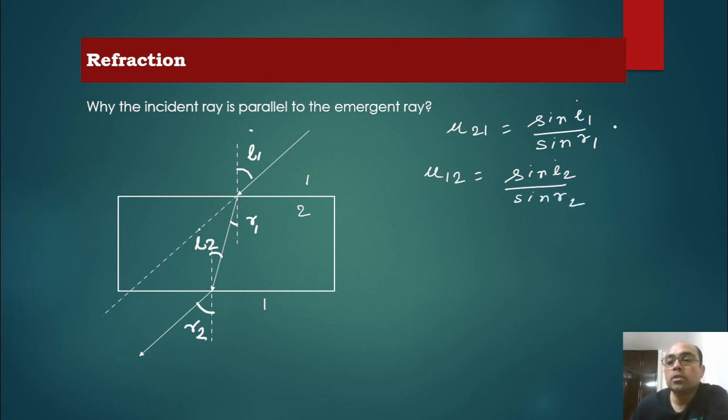Now suppose this is equation 1 and this is equation 2. We will multiply 1 with 2.